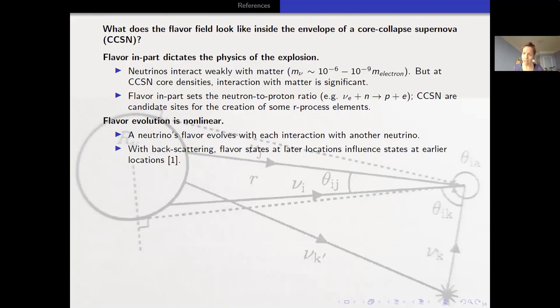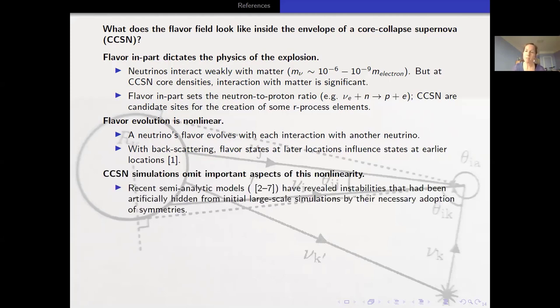Flavor can set the neutron to proton ratio. These supernovae are candidate sites for creation of r-process elements. But the flavor evolution is a non-linear process, very difficult to study with current computational techniques. Neutrino flavor is not static - if it's emitted as electron flavor, that doesn't mean it's still electron flavor a kilometer away. The flavor will change with every interaction with any other particle, including other neutrinos. The neutrinos don't just stream smoothly - there's back scattering, direction changing, energy changing, where flavor states at larger radii can impact flavor states at shorter radii. It's a fiercely non-linear beast.